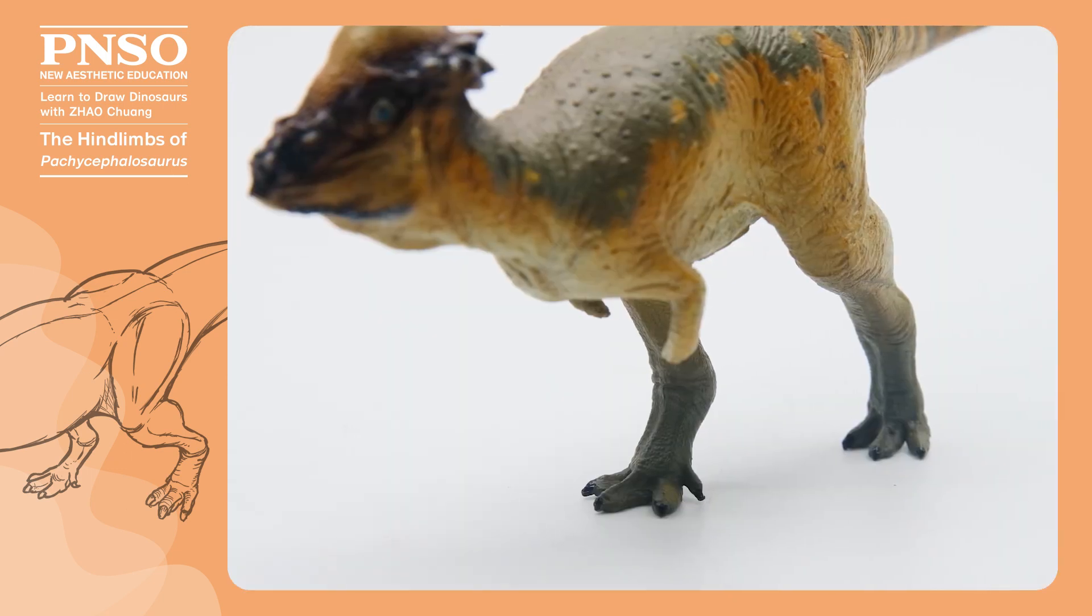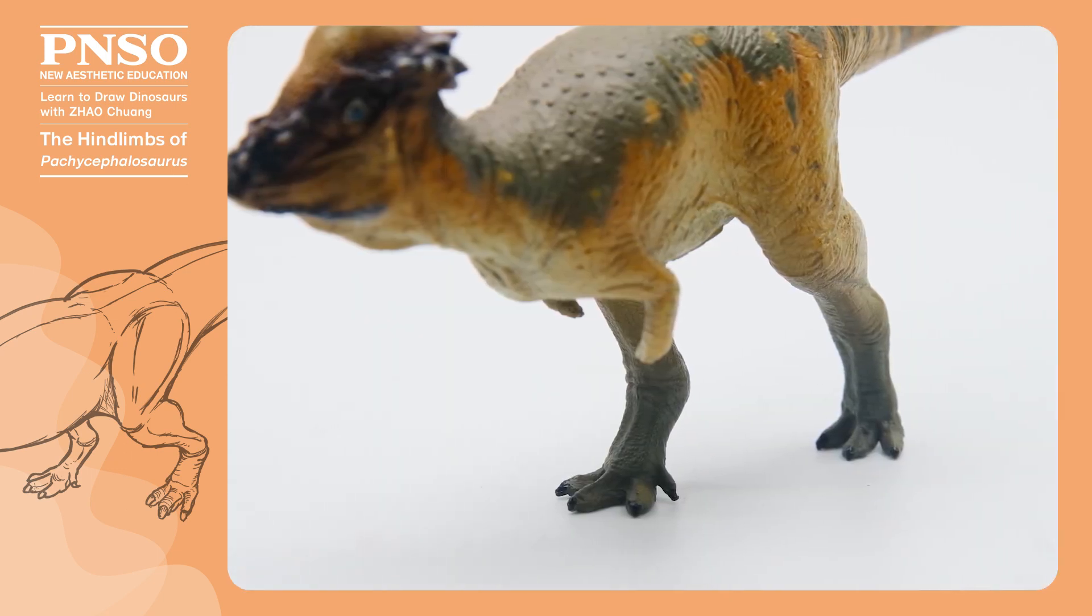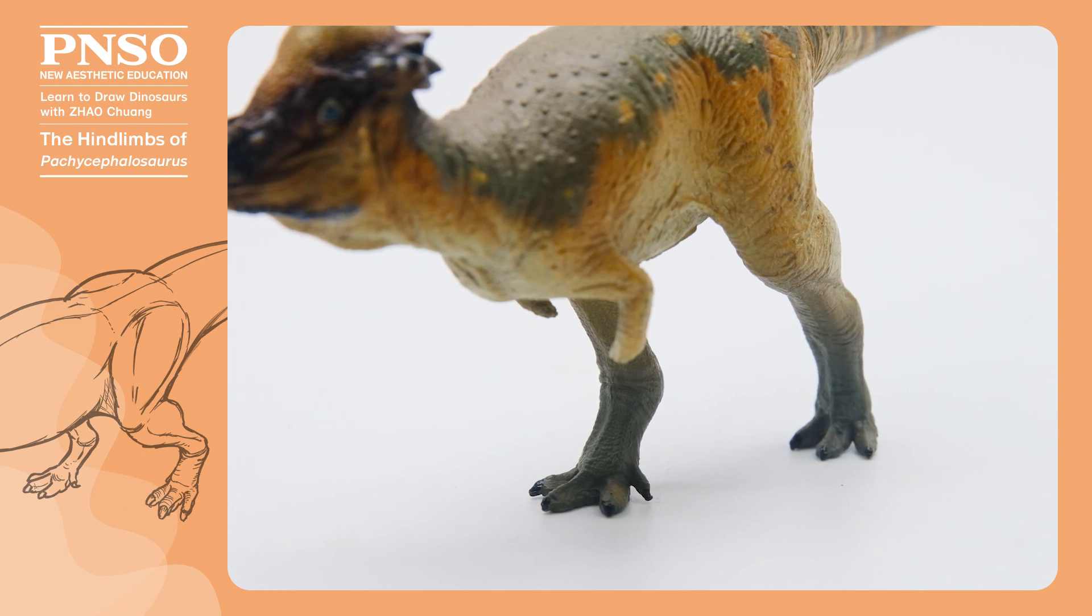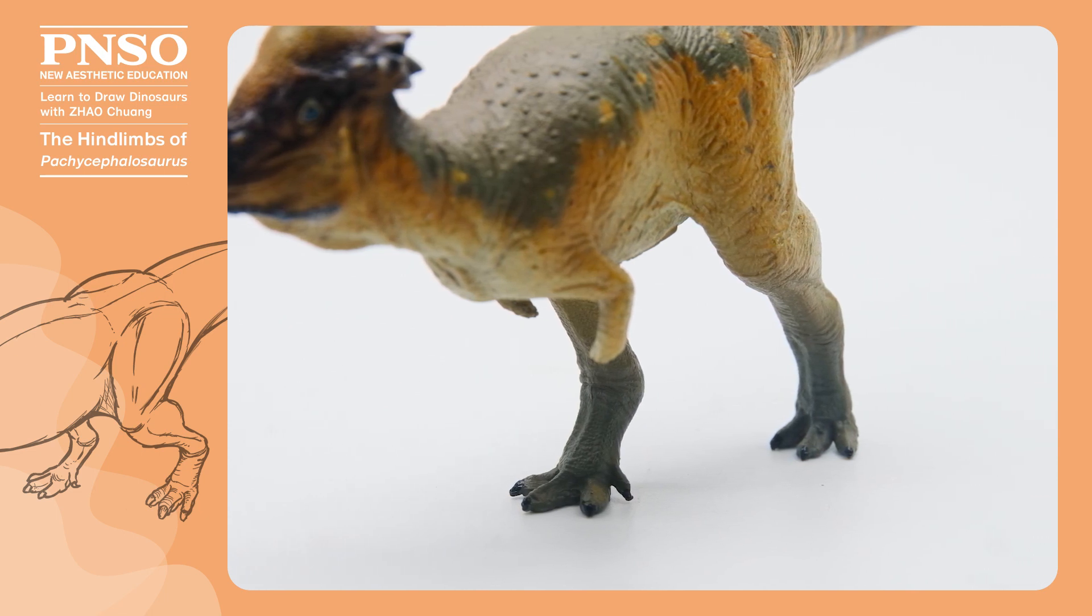The hindlimbs of Pachycephalosaurus were short but stout, and the calves were long and muscular. It had four toes on its feet. When drawing, we must focus on how its hindlimbs and trunk were connected, and understand how the muscles of the thighs grew from the pelvis.